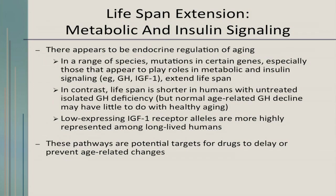What might work in improving healthy aging? Perhaps stimulating mutations in certain genes like growth hormone might help. However, if you have untreated growth hormone deficiency, your lifespan is shorter. And low-expressing IGF-1 receptor alleles are more highly represented among long-lived humans — so maybe you're not supposed to have that much. Anyway, these targets are potential for drugs to delay age-related diseases and changes.